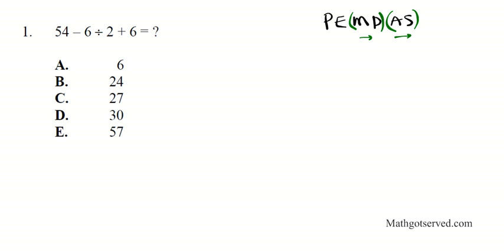If you look at this, we have 54 minus 6 divided by 2 plus 6. So division is the highest one here so we have to divide first. So 6 divided by 2 is actually negative 6 divided by positive 2 is negative 3. So 54 minus 3 is 51 plus 6 equals 57. So your answer to option 1 is E.